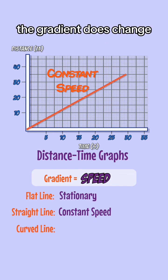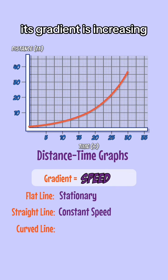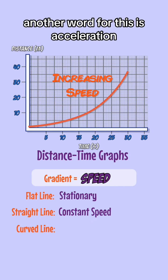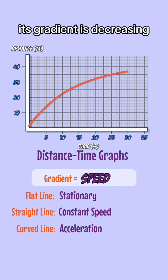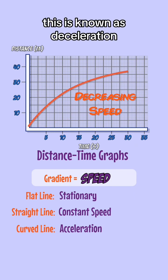In a curved line, however, the gradient does change. If the line curves and gets more steep, its gradient is increasing, which means its speed is increasing. Another word for this is acceleration. If the line curves and becomes less steep, its gradient is decreasing, meaning its speed also decreases. This is known as deceleration.